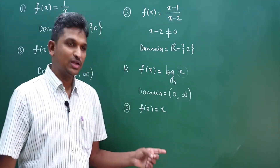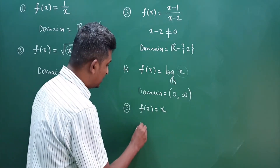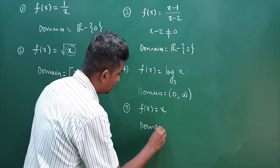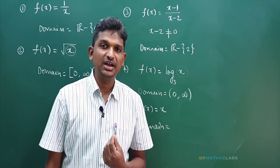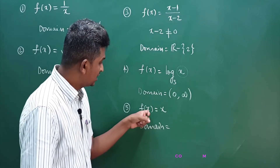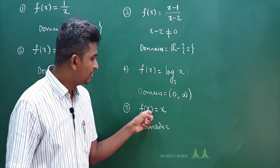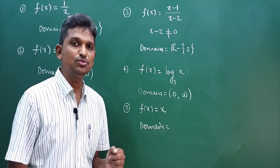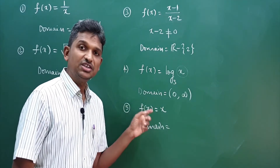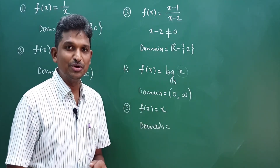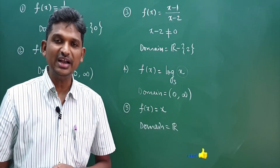Observe this one: f of x equal to x. What is the domain of this function? For what values of x is the function defined? f of 0 is 0, f of 1 is 1, f of 1 by 2 is 1 by 2. This function is defined for all real numbers. So domain of this function is all real numbers.